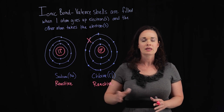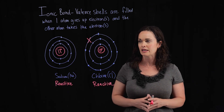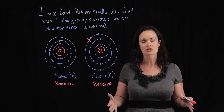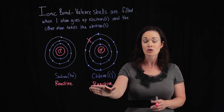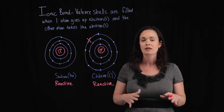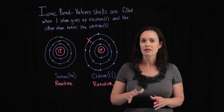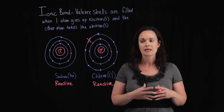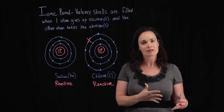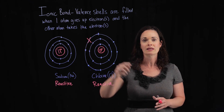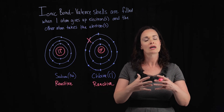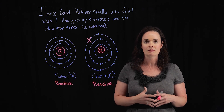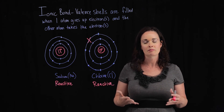Sodium is not stable — it's reactive — because its valence shell has just a single electron and is not full. Chlorine is also reactive and unstable because its valence shell is not full. The third shell can hold a total of eight electrons, and chlorine has only seven in its outermost shell — it's missing one. Both of these atoms want to interact with something else to exchange electrons and fill their outermost shells.